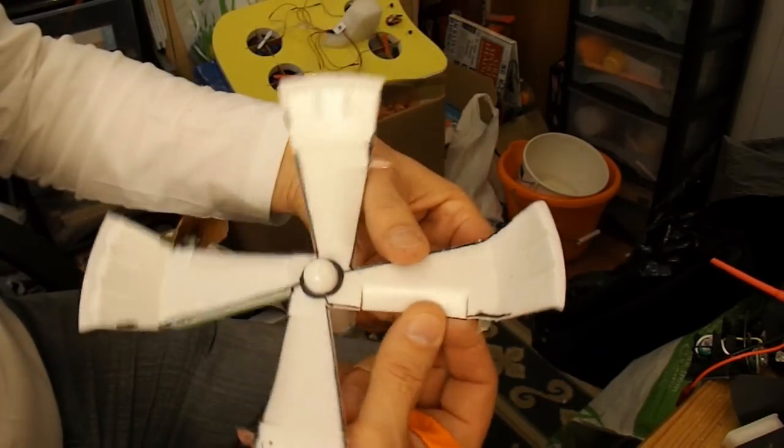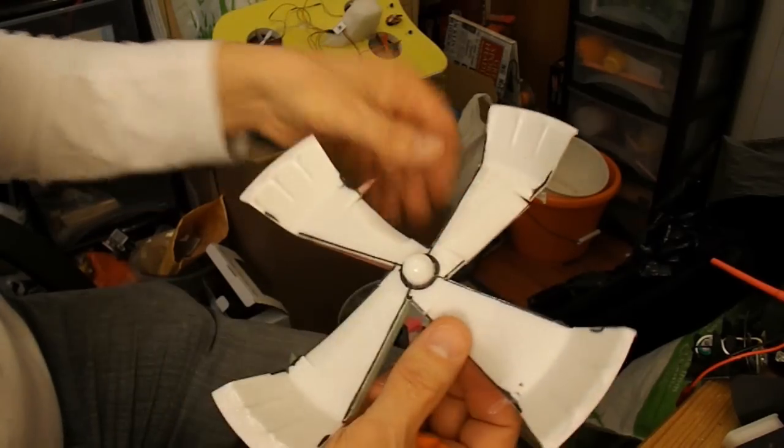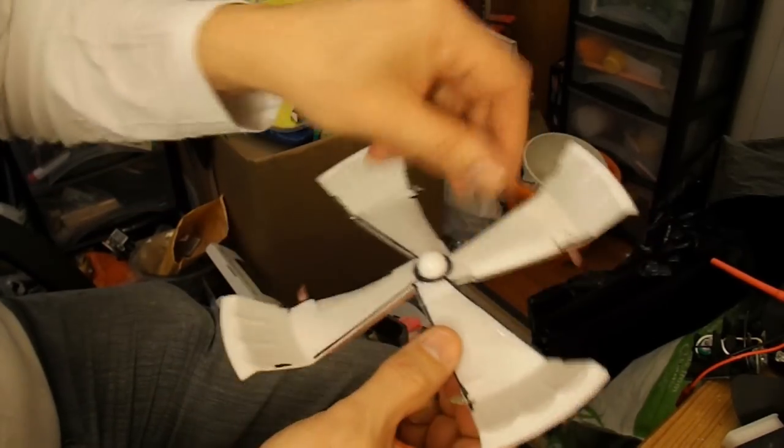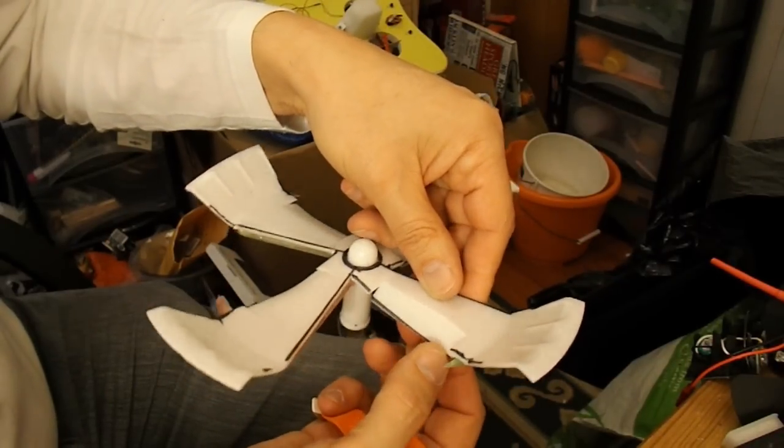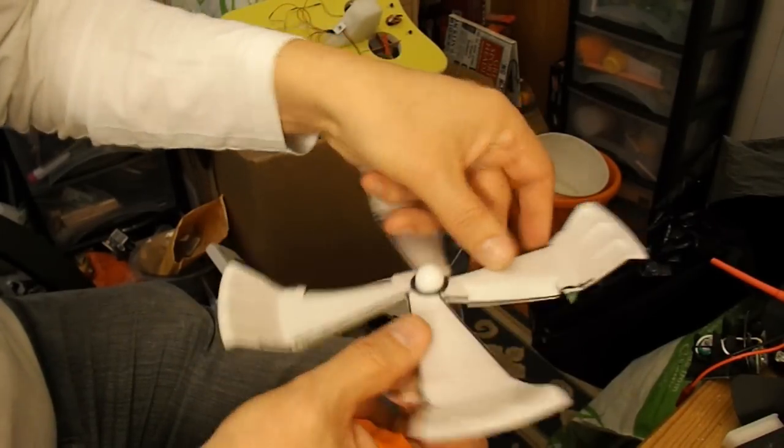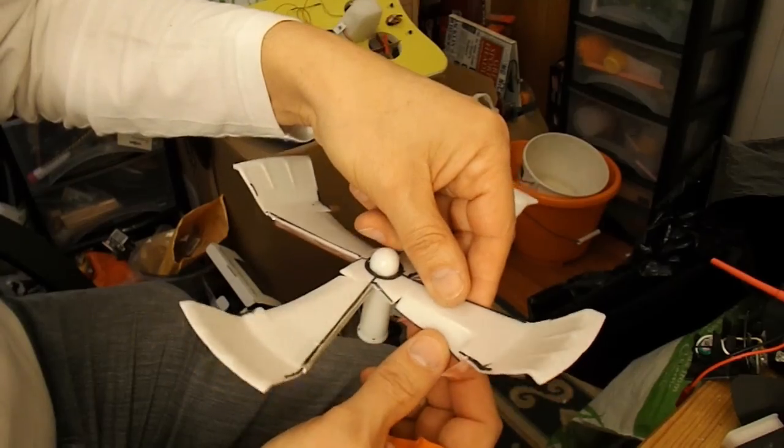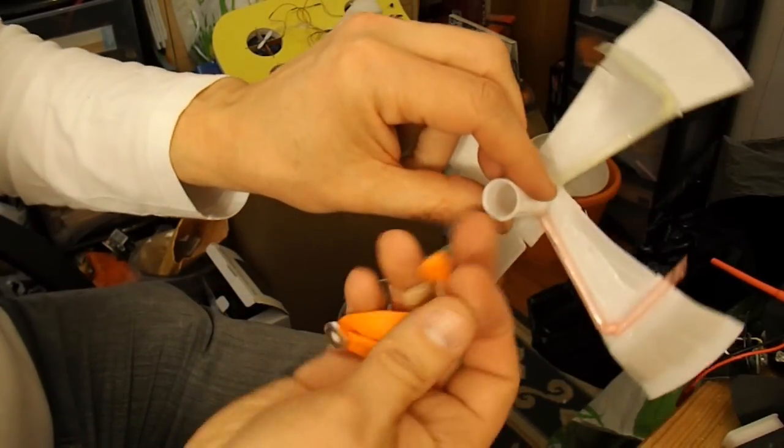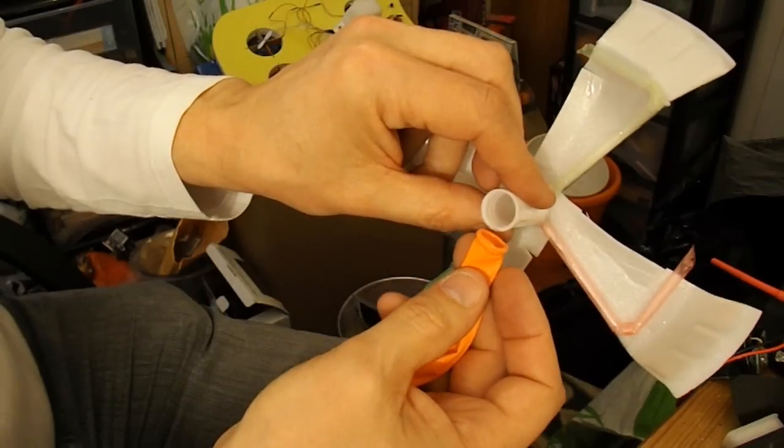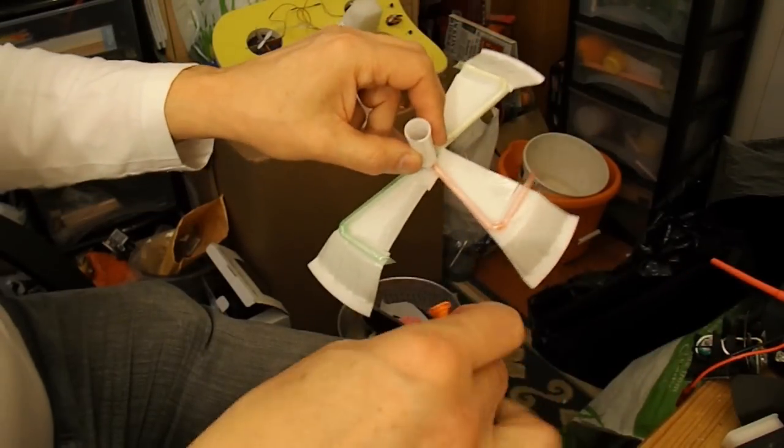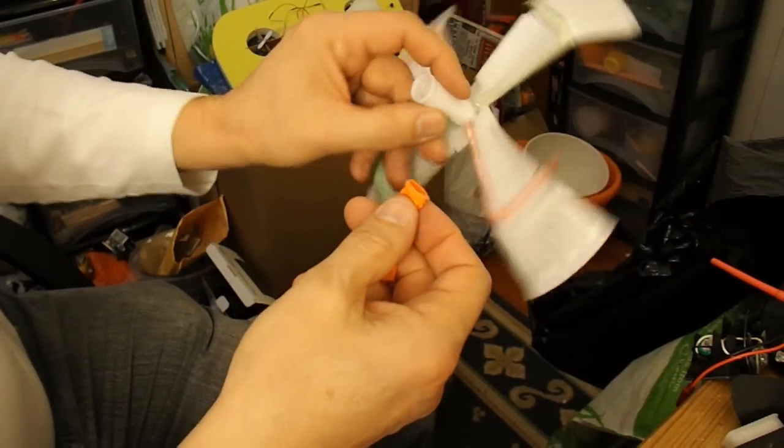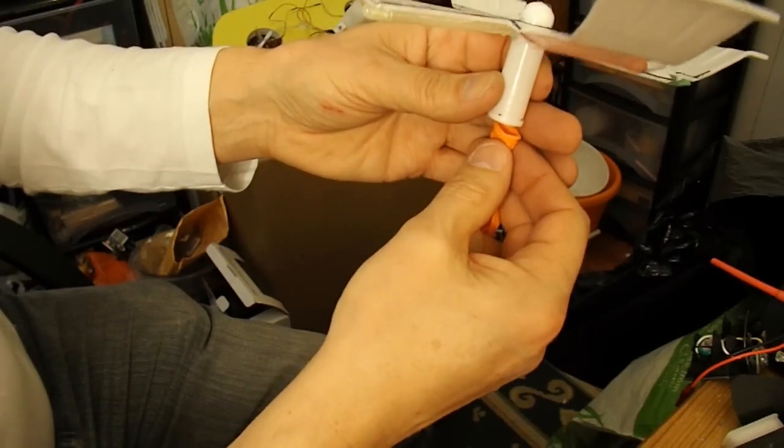I've cut flaps, or whatever you want to call them, on each of the rotor arms here to try and increase the lift generated. And I've figured out how to get the balloon onto the end quite easily. And I've also added a tiny bit of weight to the bottom of the balloon to help to hold it the right way up.